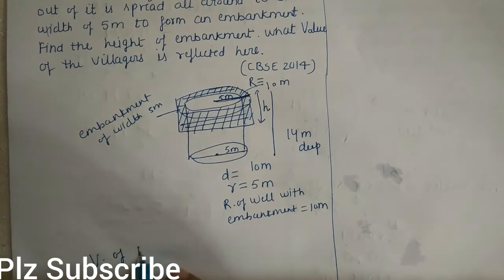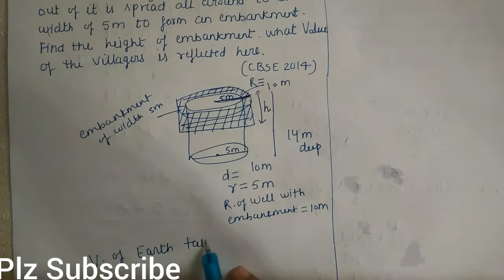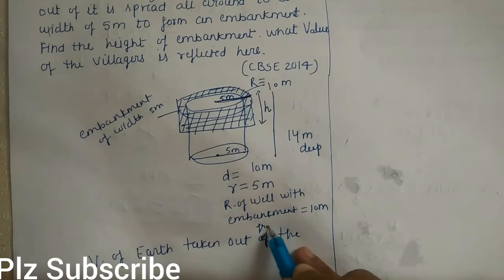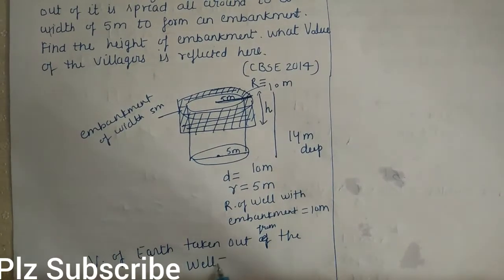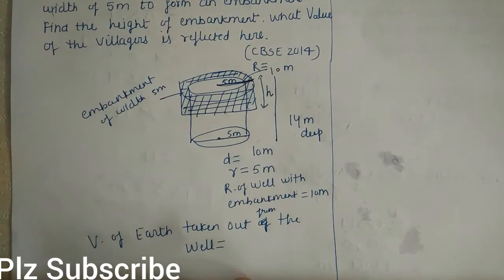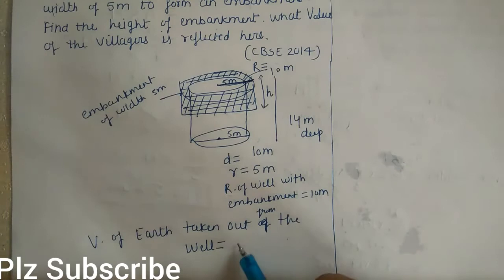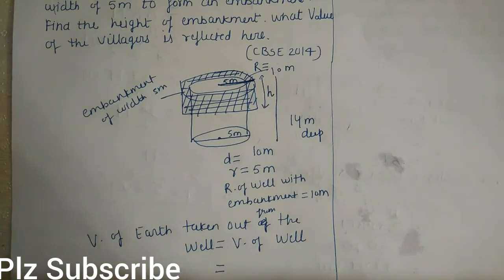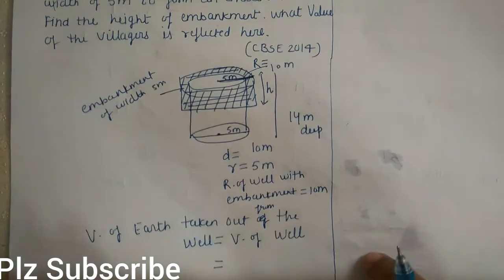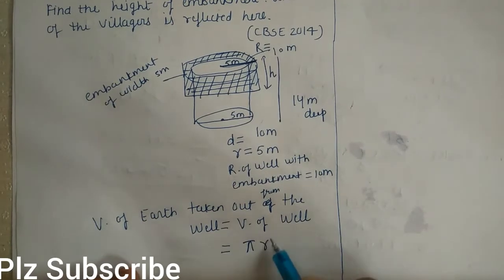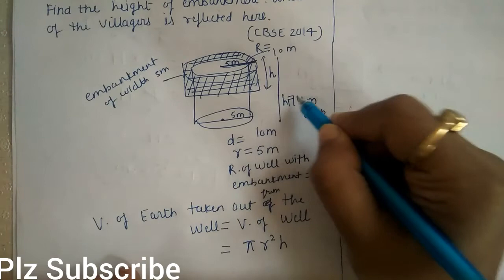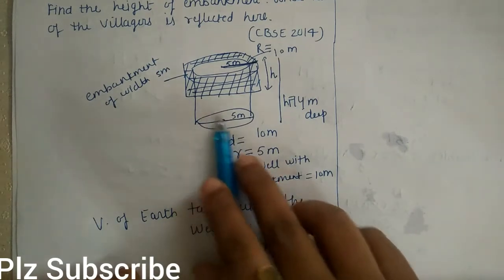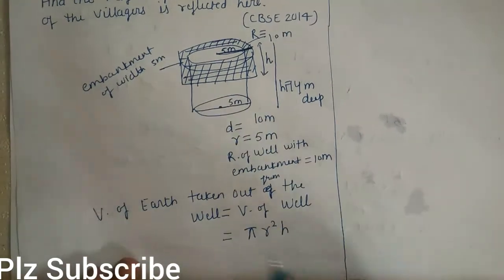Volume of earth taken out from the well — the volume of earth taken out will be equal to the volume of the well. Volume of well = π r² h₁, where h₁ is the depth of the well, which is 40 meter, and r is the radius of the well, which is 5 meter.